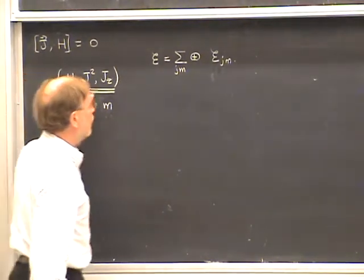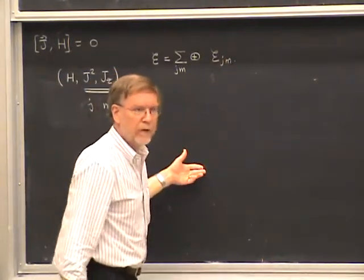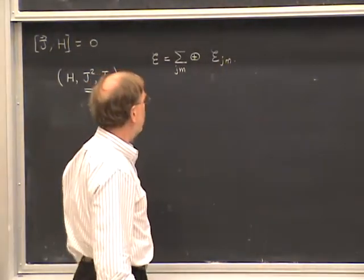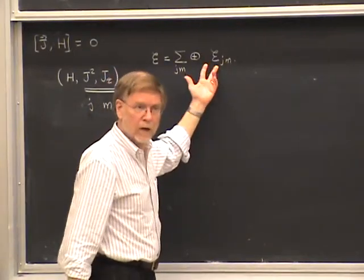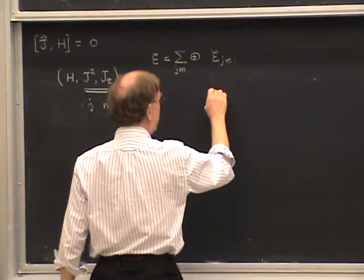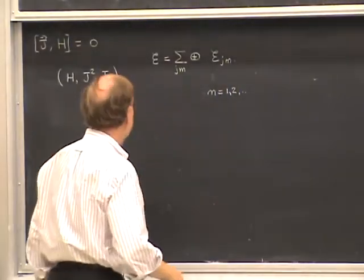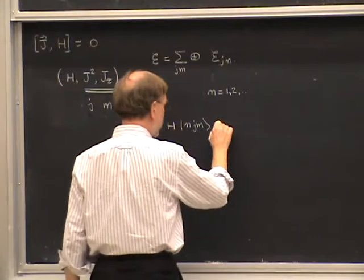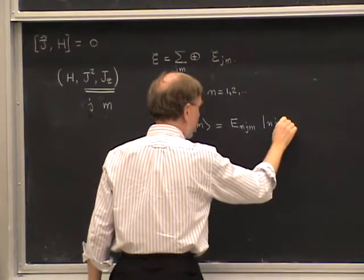If we have a Hamiltonian — a scalar, commuting with all rotations — it commutes with all three components of J. As a result it commutes with J-squared and J_Z, giving a collection of three mutually commuting operators that possess simultaneous eigenstates. One way to find those eigenstates is to start by diagonalizing J-squared and J_Z with quantum numbers J and M — the total angular momentum. We call the eigenspace E_JM. Then to find energy eigenvalues, we diagonalize the Hamiltonian in each of these subspaces.